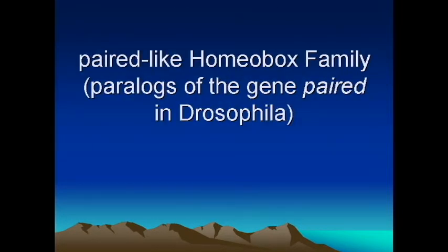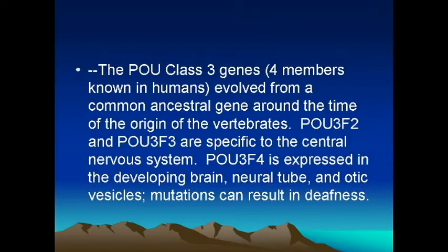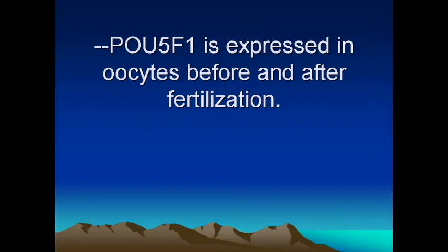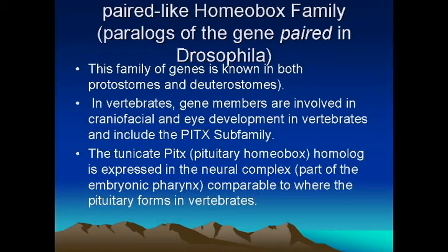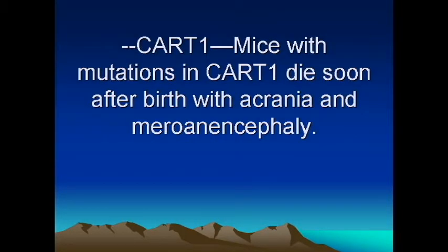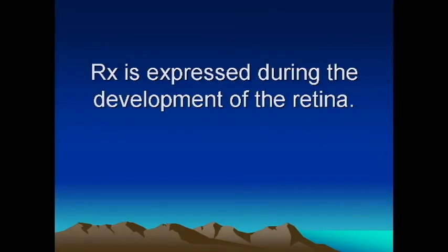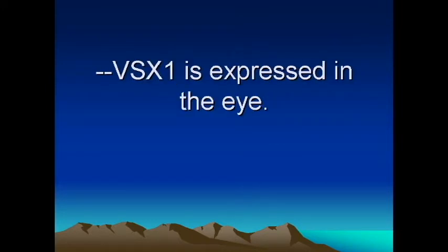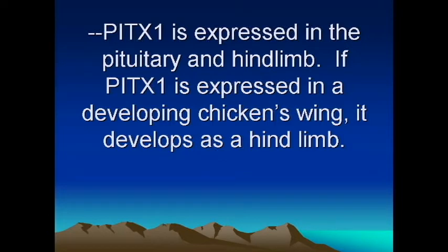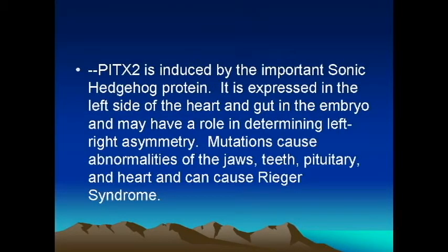Obviously, human brains are not fruit fly brains, human eyes are not fruit fly eyes, human limbs are not fruit fly limbs, etc. However, we use many of the same genes to develop human complexity as flies use to develop their complexity. So even though limbs are different, both humans and flies use TALE gene homologs — T-A-L-E gene homologs — which are homeodomains, to develop these limbs.